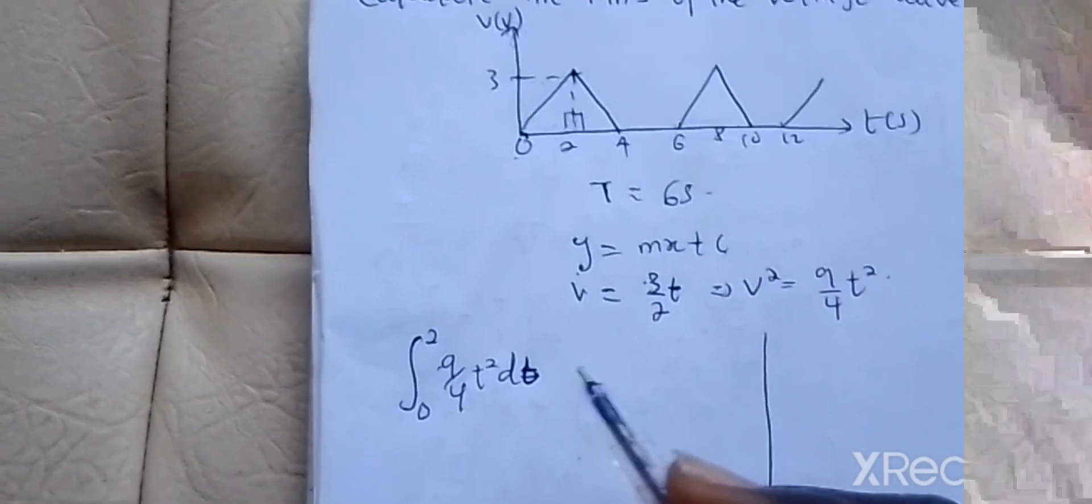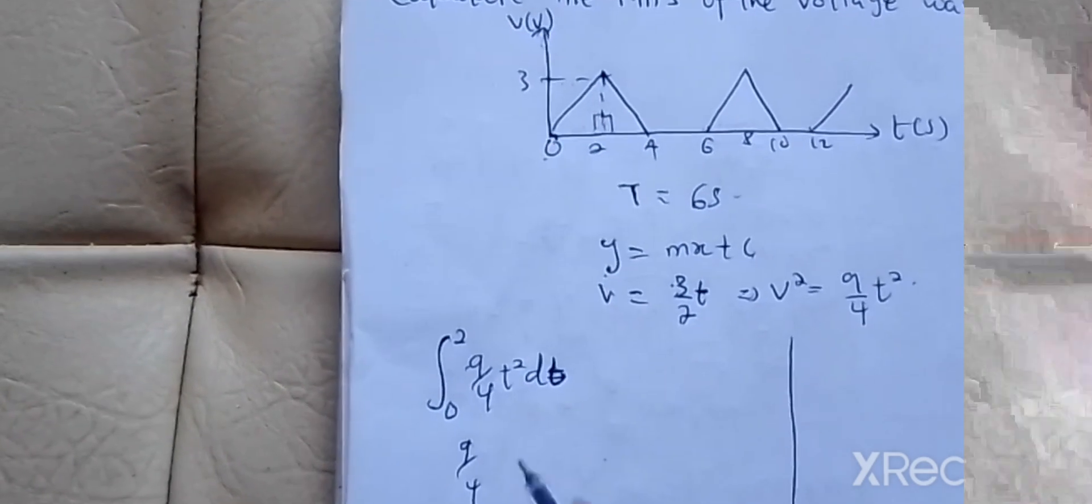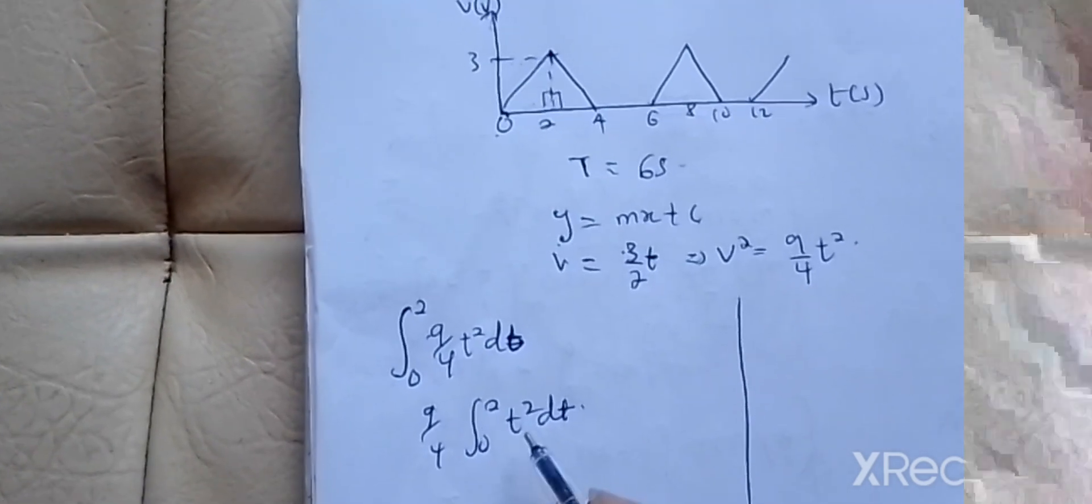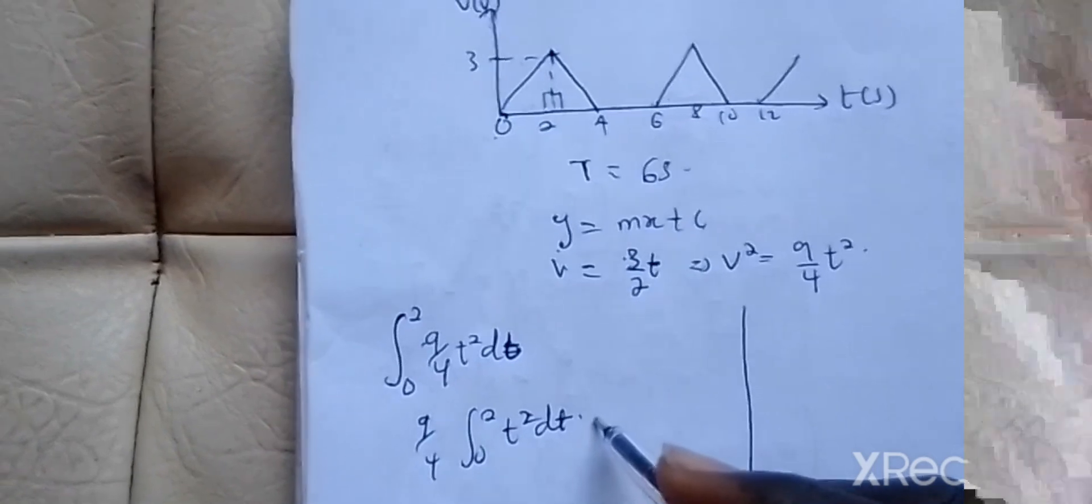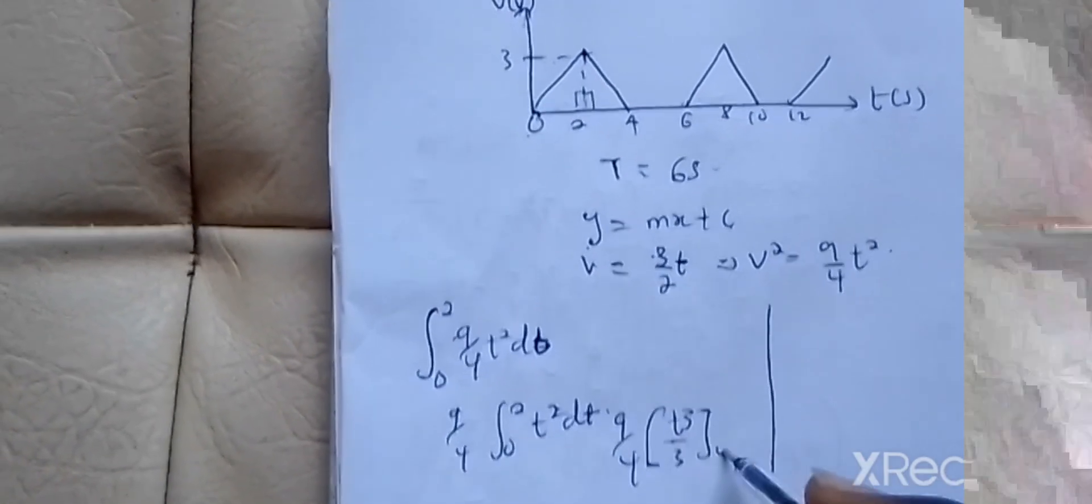This is a constant, so you move it out. You get 9 over 4 integral 0 to 2 T squared dT. If you integrate T squared, you add 1 to the 2 making 3, divided by 3. So you get 9 over 4 times T cubed over 3, from 0 to 2.